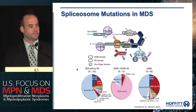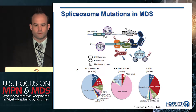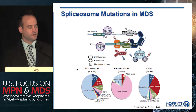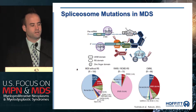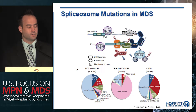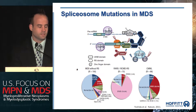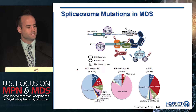Focusing on splicing factor mutations, elegant work published back in 2011 showed that these mutations are highly concordant with the pathogenesis of MDS. They predominantly affect the three prime splicing sites, affecting both intron removal and exon joining. Strikingly, SF3B1 mutations were highly concordant with the presence of ring sideroblasts, and in CMML about half of patients have splicing factor mutations, with SRSF2 being the most common.